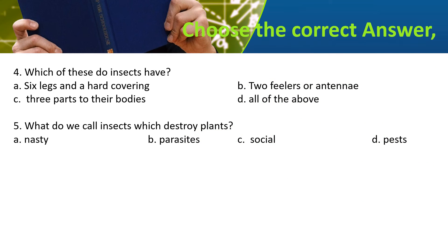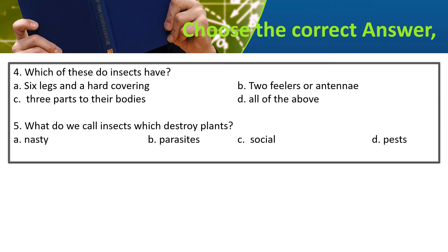Which of these do insects have? Insects have 6 legs and a hard covering, 2 feelers or antennae, 3 parts to their bodies — or all of the above. The answer is all of the above.